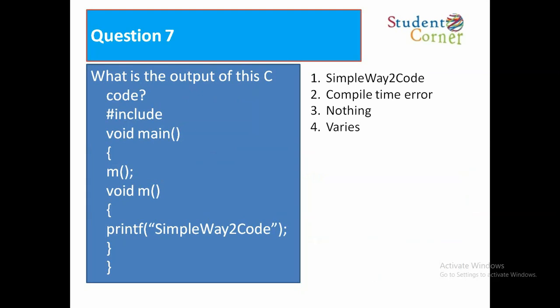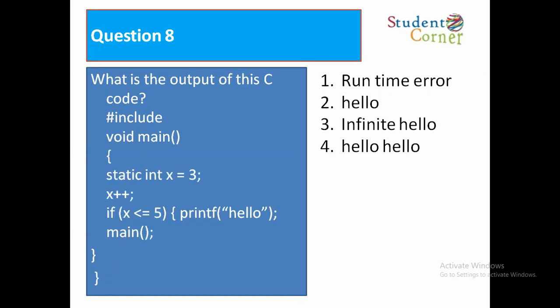Question 7: What is the output of this C code? #include, void main(), void m(), printf("simple way to code"). Option 1: Simple way to code. Option 2: Compile time error. Option 3: Nothing. Option 4: Varies. Answer: Compile time error, because we are not closing the main function but internally we are writing another function, which is not at all possible.